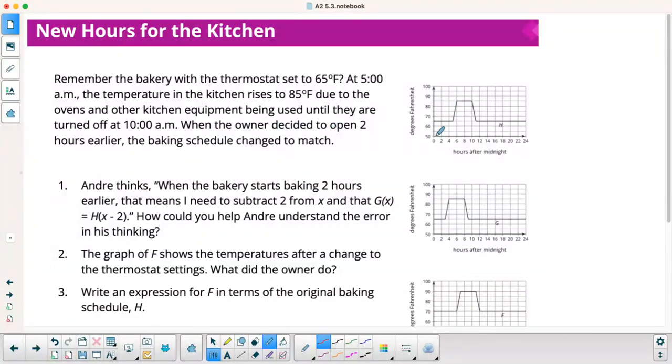So here's my original. So hours after midnight. So it doesn't turn the ovens on until 5 a.m. So right here at 5, the temperature starts going up. So Andre thinks when the bakery starts baking 2 hours earlier, that means I need to subtract 2 from X, and that G of X is equal to H of X minus 2. How could you help Andre understand that error in the thinking? All right, so take a minute. Think about that.